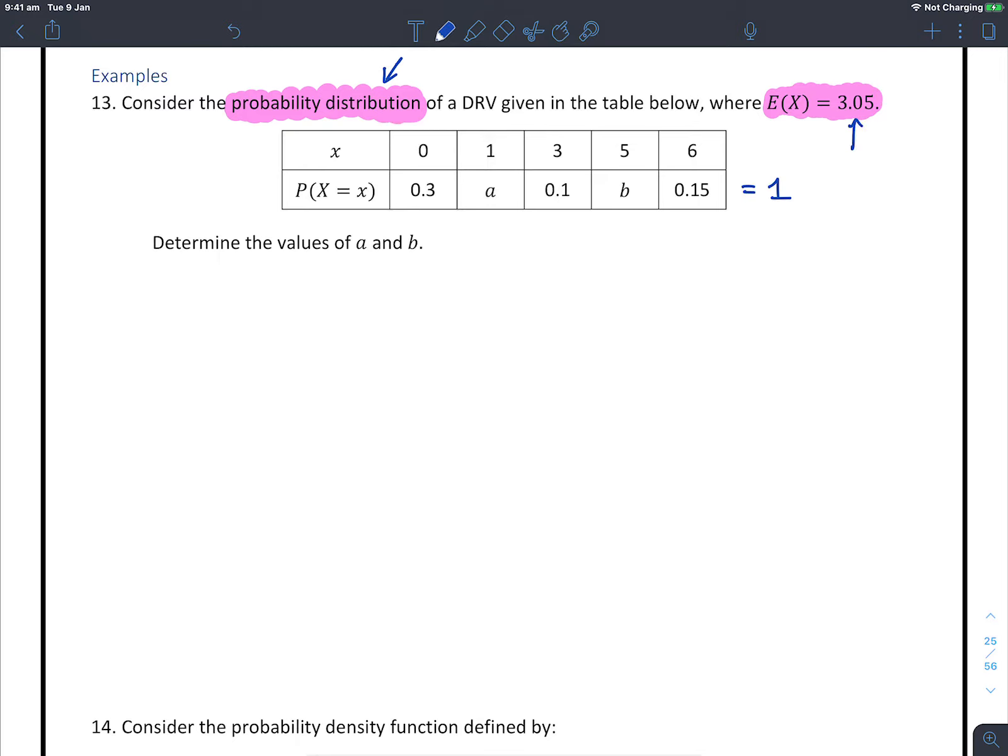Now where is this second equation I hear you ask? Well we were told the expected value of our scores and we have an equation to find expected value. So we have two separate equations. Let's set that up. We know that 0.3 plus a plus 0.1 plus b plus 0.15, that's got to equal one. A plus b plus 0.55 equals one. So therefore a plus b equals one minus 0.55, so 0.45. Call that equation one.